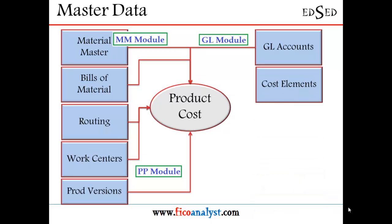Then there are cost elements — GL accounts and parallel accounts can be cost elements. Cost elements can be primary or secondary. These cost elements need to be in place in order to have your product cost estimated, making them an important master data element overall.